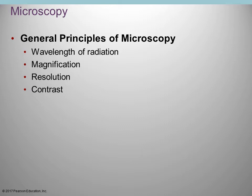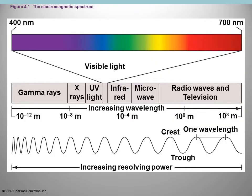First, we're going to talk about microscopy — the different principles of using the microscope, how it works, how we're able to see things. A brief review in terms of wavelengths: you have different types of rays — gamma rays, x-rays. Visible light is only a very small section of the wavelength spectrum. Different microscopes are going to be able to use different forms of this.